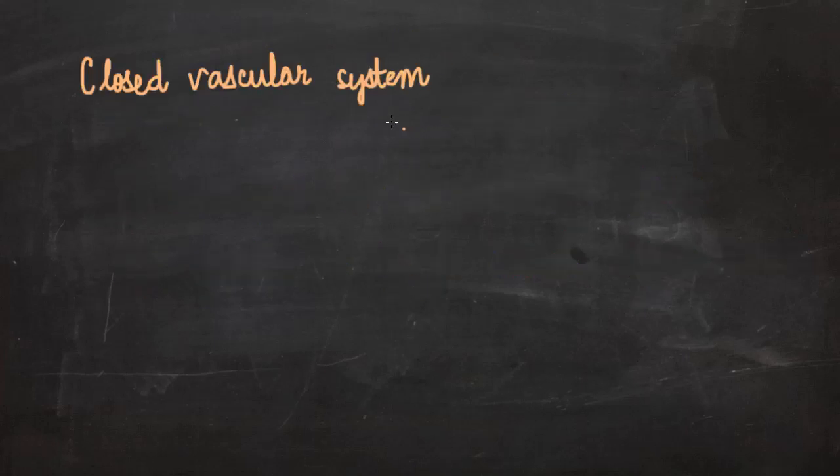In our bodies, blood is flowing in closed blood vessels. That is why it is called a closed vascular system type of circulatory system, wherein blood is always flowing in special blood vessels. For us, it is arteries, veins, and capillaries.